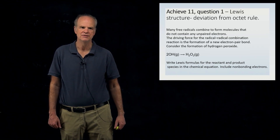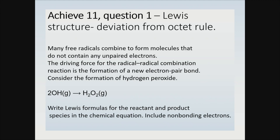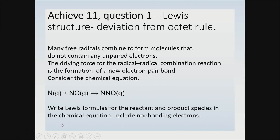Welcome back to chemistry. The problem reads: many free radicals combine to form molecules that do not contain any unpaired electrons. The driving force for the radical-radical combination reaction is the formation of a new electron pair bond. Consider the formation of hydrogen peroxide — two hydroxyls react to form hydrogen peroxide. Write Lewis formulas for the reactant and product species including non-bonding electrons. Alternatively, you might have the problem where nitrogen reacts with nitrogen oxide to produce N₂O.